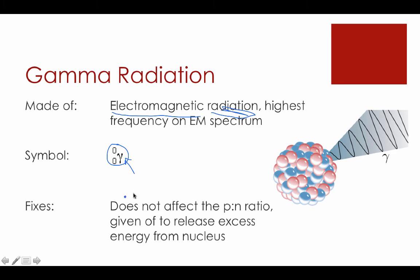A gamma particle is given off usually in concert with other types of radiation. It doesn't affect the proton-to-neutron ratio, but when other types of radiation do happen, and you have a reshuffling of protons and neutrons in the nucleus, any excess energy left over from that process can be released as gamma radiation.